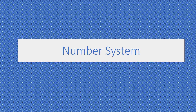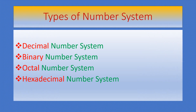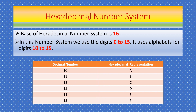The base of the hexadecimal number system is 16. In this number system we use the digits 0 to 15. It uses alphabets for digits 10 to 15. So in hexadecimal there are 16 digits — 0 to 9 are written as is, and for 10 to 15 we use alphabets: 10 is A, 11 is B, 12 is C, and 15 is F.